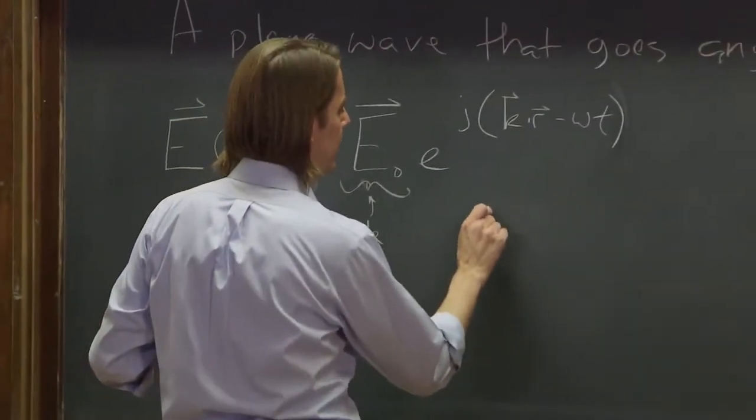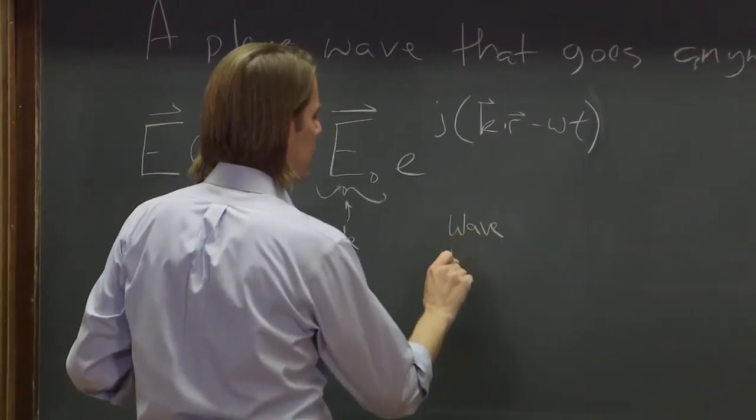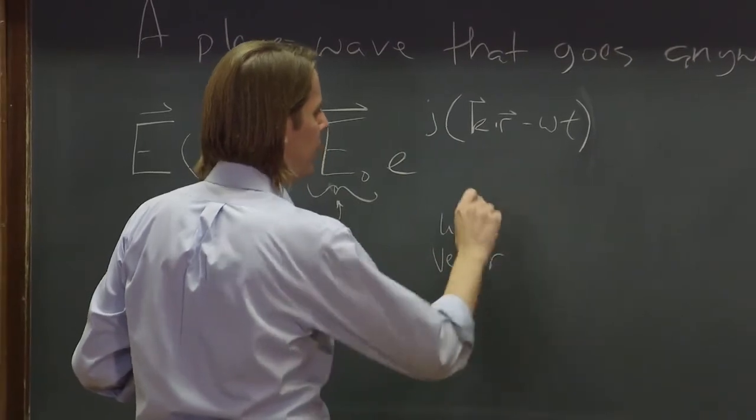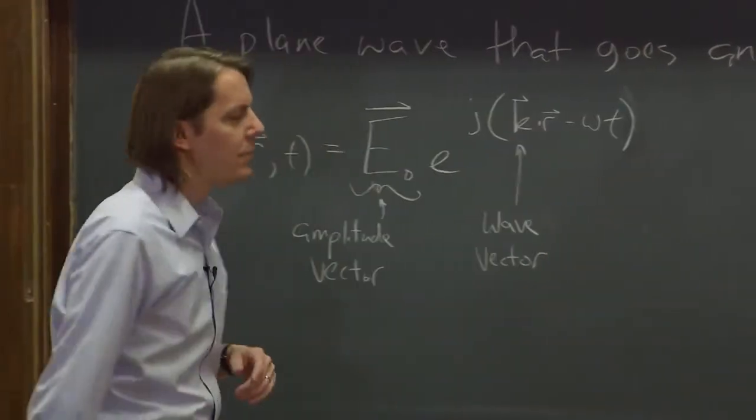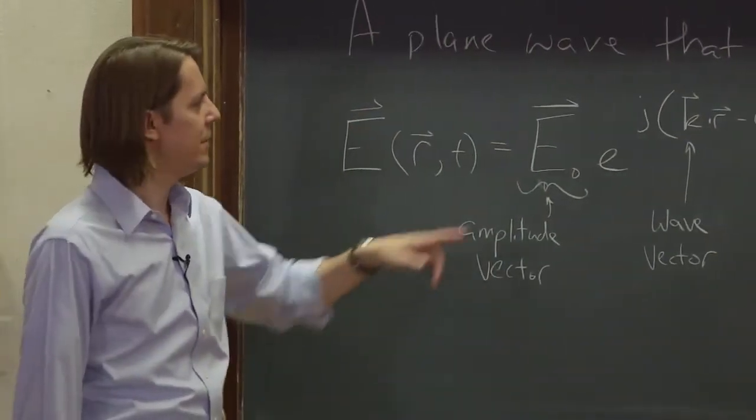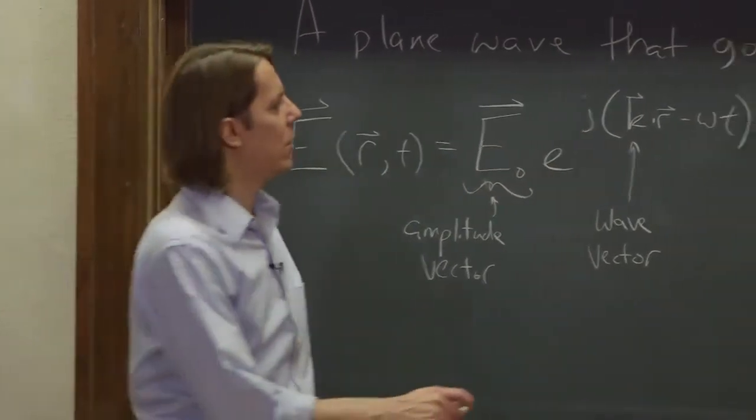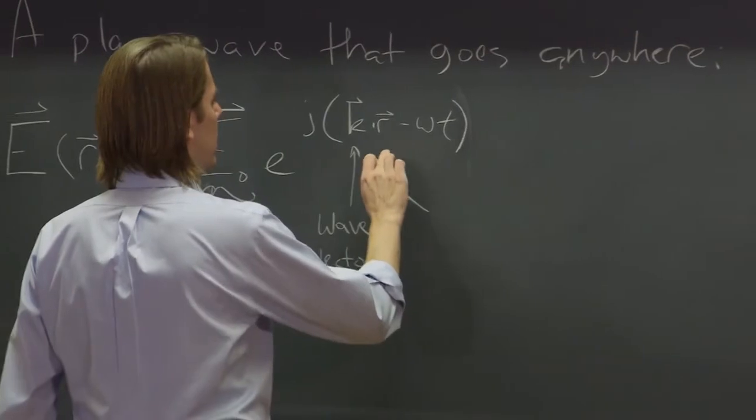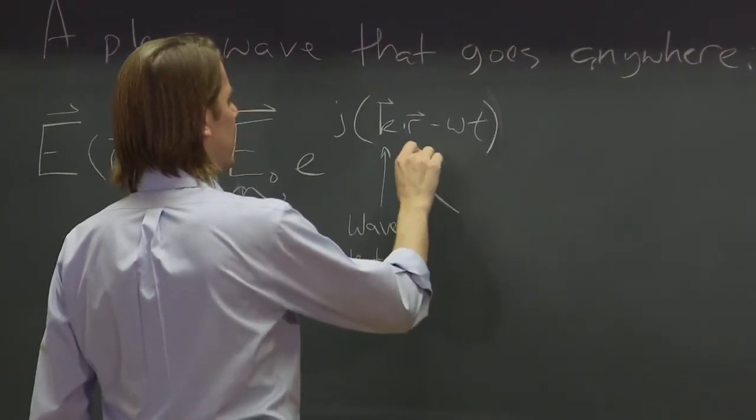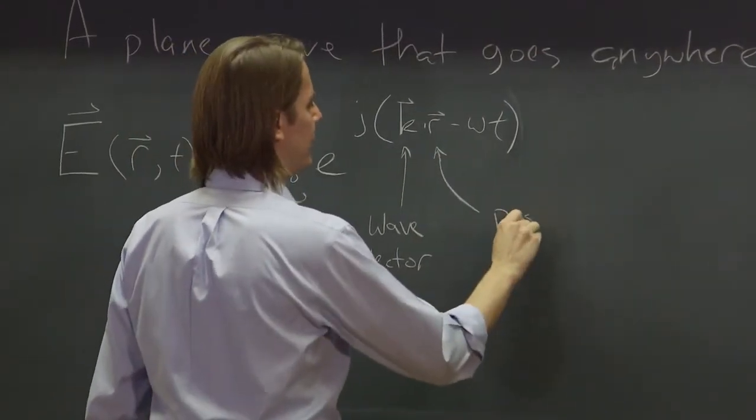Here we have that wave vector we talked about. So it contains both the frequency information and the direction of propagation. It has to be perpendicular to e-naught. And r, as you've probably seen in other physics classes, is simply the position vector.